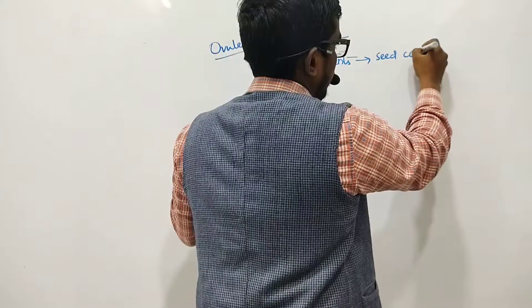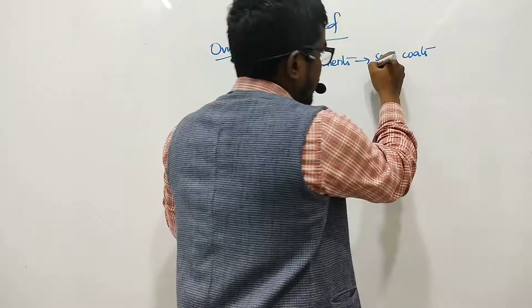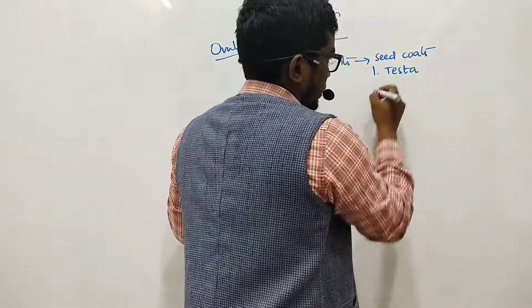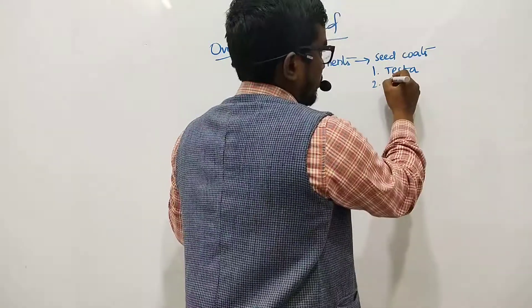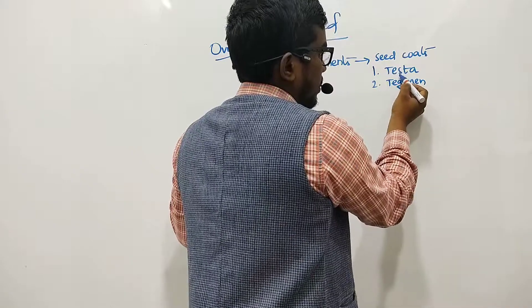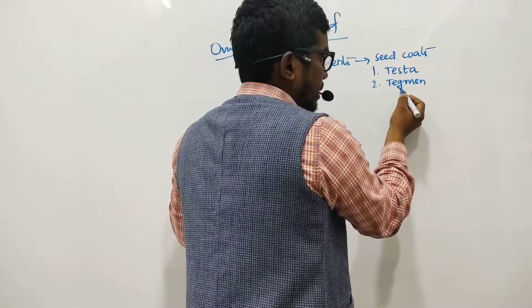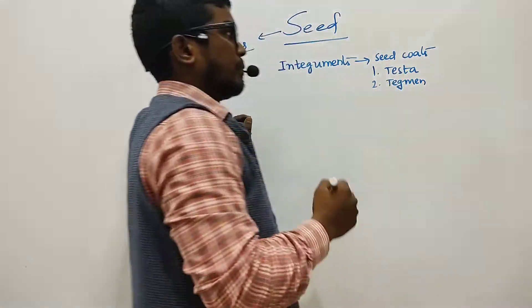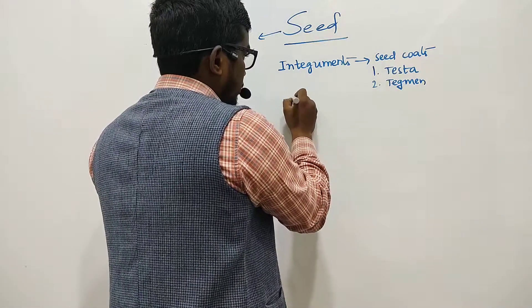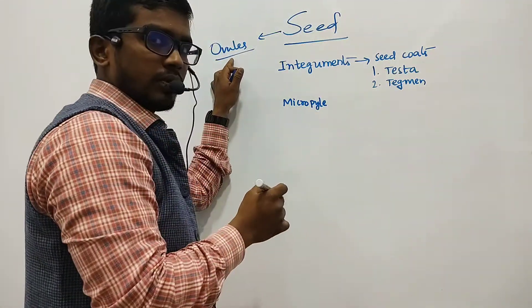There are two types of seed coats: the outer seed coat called testa and the inner seed coat called tegmen. Testa is leathery and very thick compared to tegmen, which is generally very thin.